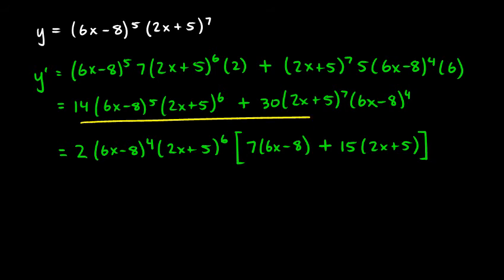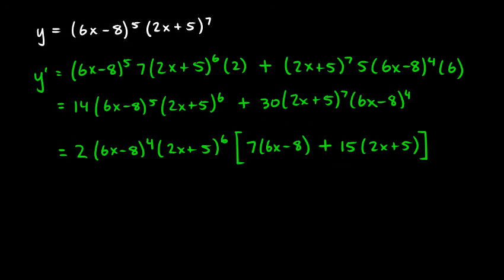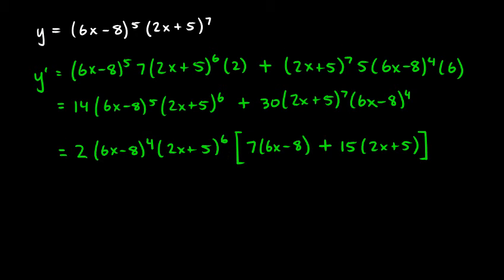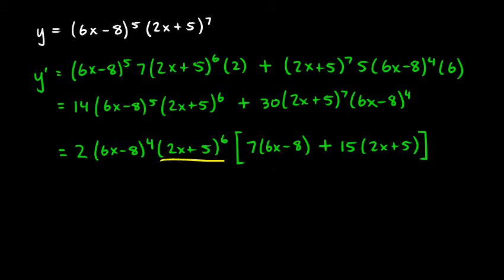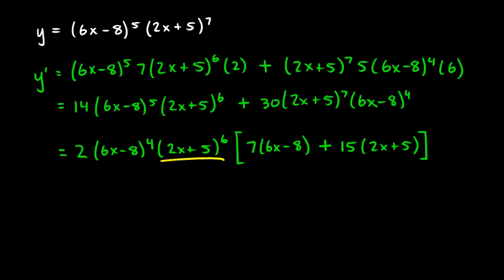To verify this step, imagine distributing everything back out. The 2 times 7 gives 14; (6x minus 8) to the fourth times (6x minus 8) gives (6x minus 8) to the fifth; and (2x plus 5) to the sixth comes along with it. For the second term, 2 times 15 gives 30, (6x minus 8) to the fourth appears, and (2x plus 5) to the sixth times (2x plus 5) gives (2x plus 5) to the seventh. The two lines are mathematically equivalent.